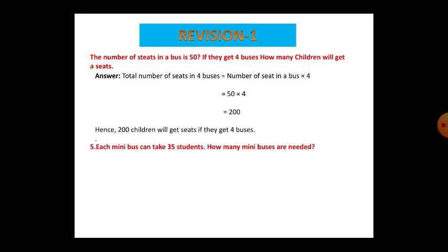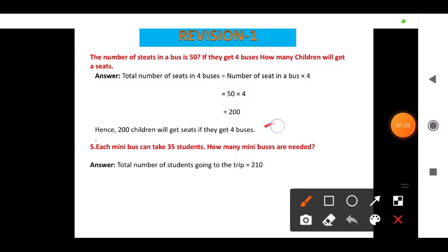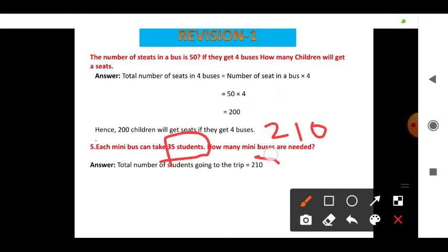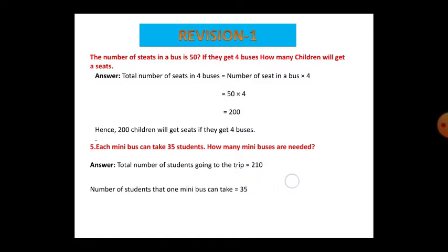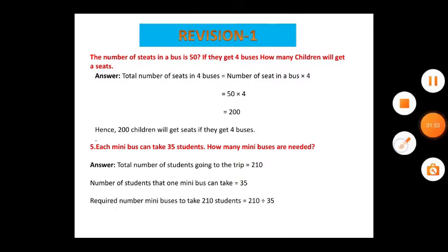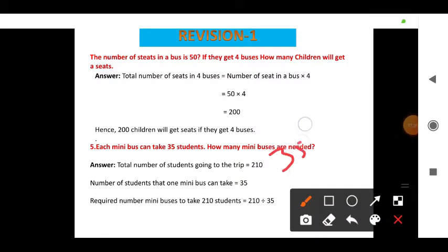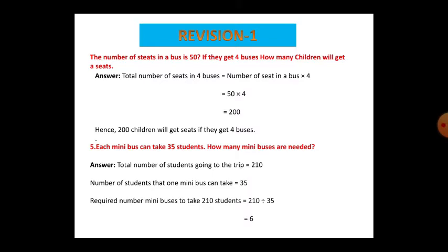Each mini bus can take 35 students. How many mini buses are needed? The total number of students going on the trip is 210. Each mini bus takes 35 students. So here you have to divide: 210 divided by 35 equals 6. So 6 mini buses are required.